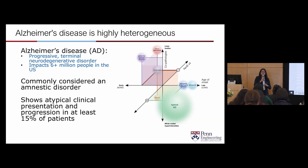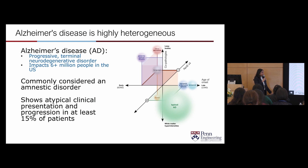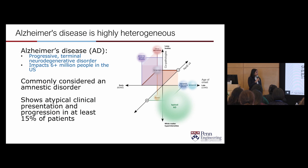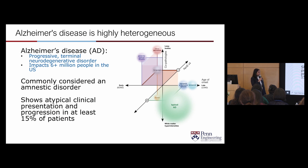How many of you know someone who has or unfortunately passed away from Alzheimer's disease? A fair number of you. Alzheimer's disease is very well known. It's a progressive terminal neurodegenerative disorder impacting almost 6 million people in the United States, even more globally. We expect this number to increase to about 13 million by 2050. It's a big problem, and it's just one of the forms of dementia. Alzheimer's is one of the main causes of dementia.